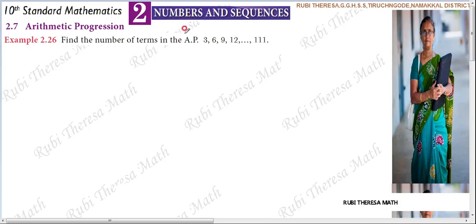Example 2.26 Arithmetic Progression. Find the number of terms in the AP: 3, 6, 9, 12, ... The last term of the sequence is given. Up to this point you have seen infinite sequences in examples, but this sequence is different.